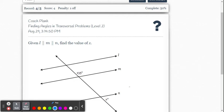In this video I want to look at a couple examples for finding angles in transversal problems level 2. It's not much of a jump from the level 1 problems we looked at earlier.